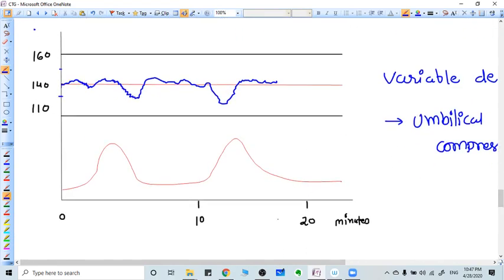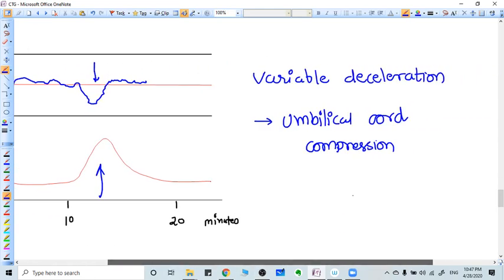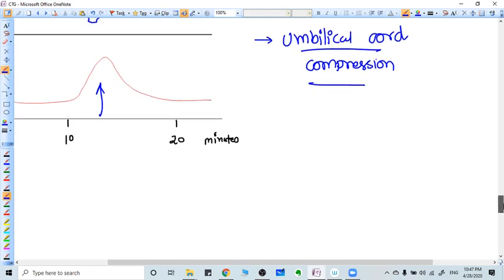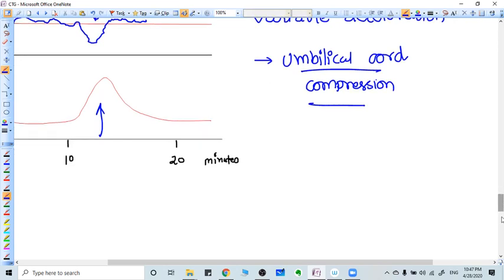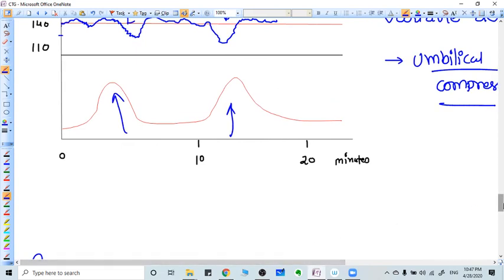Third type of deceleration is there. This is uterine contraction. This is also uterine contraction. But these decelerations are variable. They don't just correlate with these uterine contractions. What can be the reason? The reason is it's because of umbilical cord compression. These decelerations are not per se very dangerous, but we have to monitor frequently. If it doesn't recover by giving oxygen to mother, by giving fluid to the mother, if it is persistent, then it becomes dangerous and we should think about delivery.